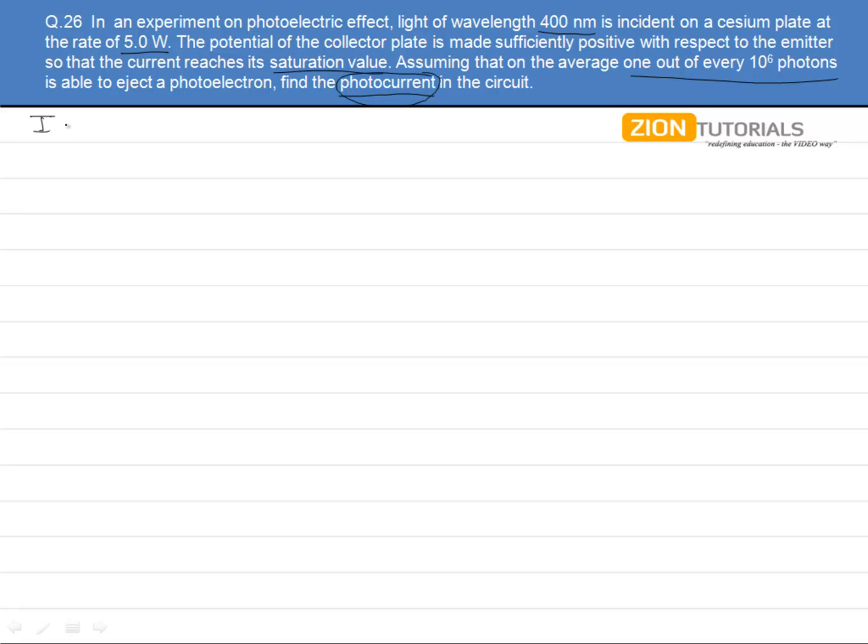If I write it as I, it is basically Q by T. But what is charge? Charge is the number of electrons, the photoelectrons, times e upon time. So if I can find out the number of photoelectrons per unit time, I will be able to find this.